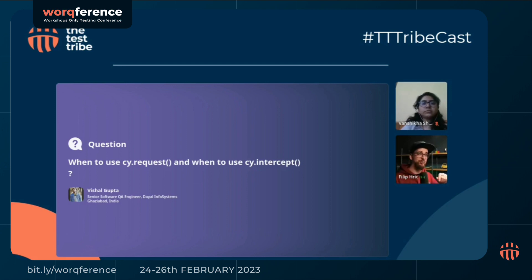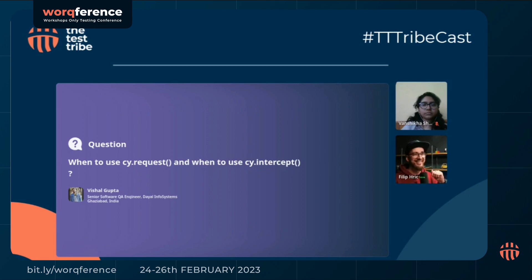So if I were to assign emojis to that, request would be a rocket and intercept would be the eyes. So maybe something like that.